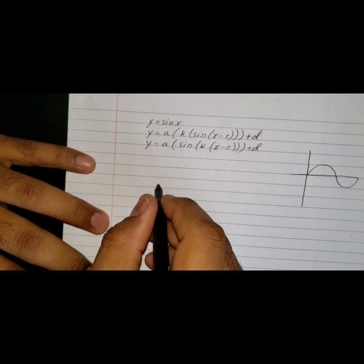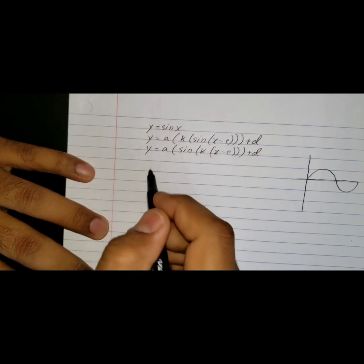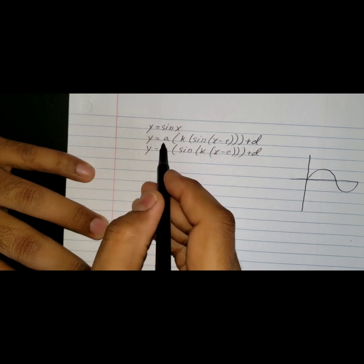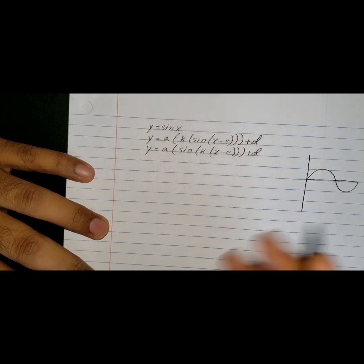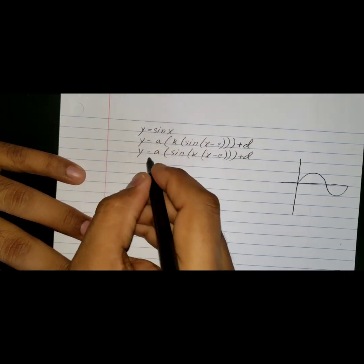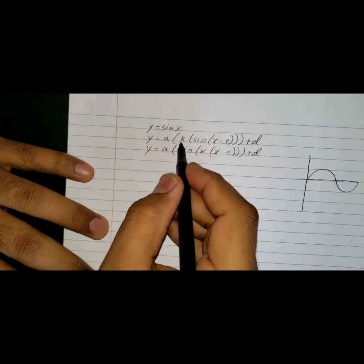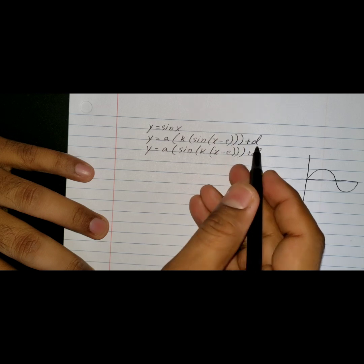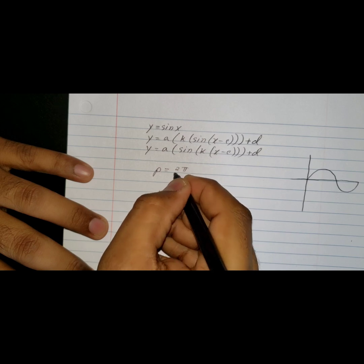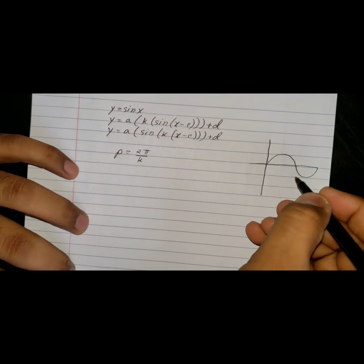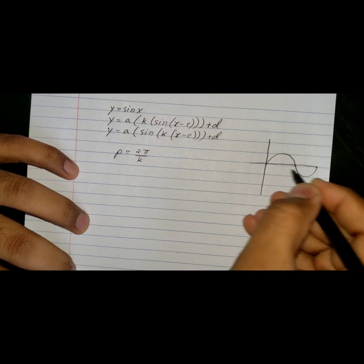The parent function of a sinusoidal function is written as y = sin(x) or cos(x). The transformed model is: y = a·sin(k(x − c)) + d. In this model, 'a' is the amplitude, 'k' is a constant that affects the period, 'c' is a horizontal translation, and 'd' is a vertical shift. The period is 2π/k. The period represents one full revolution or one cycle of the sinusoidal function.